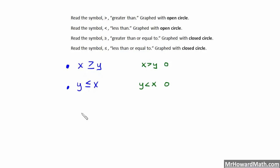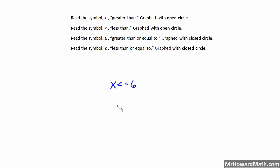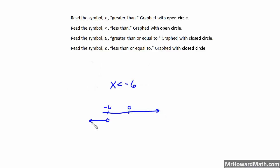Let's look at an example: x is less than negative 6. To graph that on a number line, we draw the number line, place 0 and negative 6. Since the symbol is less than, we use an open circle. Notice the inequality symbol points to the left, so we draw the arrow to the left from negative 6 with an open circle. This graph represents all x less than negative 6.